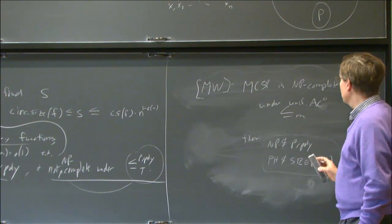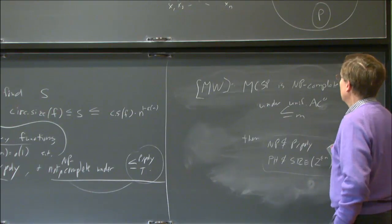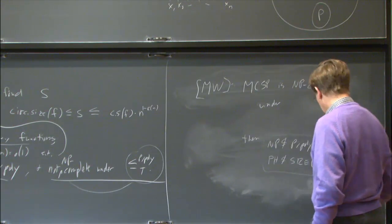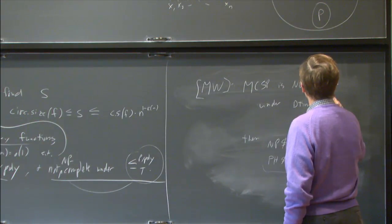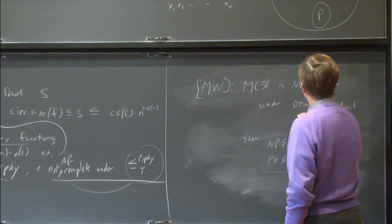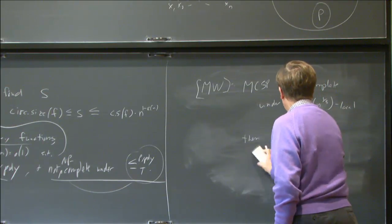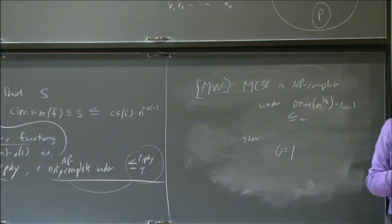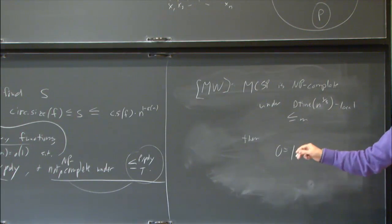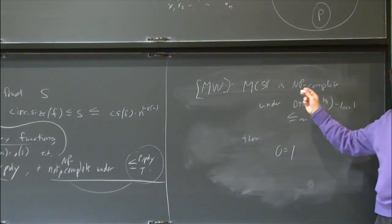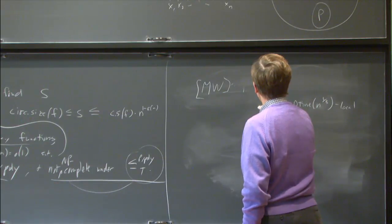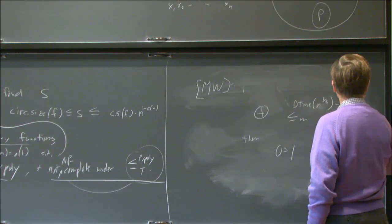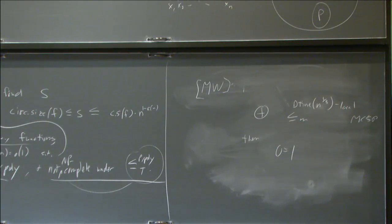Murray and Williams also proved an unconditional result: if MCSP were complete under so-called d-time n to the cube-root-of-n local reductions, then zero equals one — a contradiction. So if you really restrict the type of reduction a lot, you can get an unconditional result. Not only can't you reduce NP to this, but even if you could reduce the parity function to MCSP under this really local type of reduction, you get a contradiction.